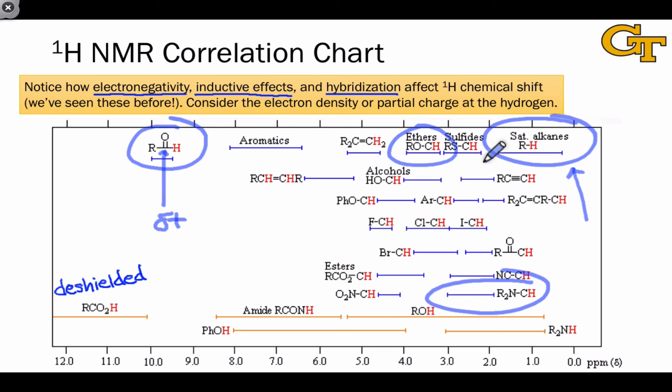Hybridization plays a role in the difference between saturated alkane protons and alkene protons, which show up at higher chemical shift. Although I won't delve into the explanation at this point, alkyne protons are relatively unique in being shielded, and aromatic protons show up distinctly more deshielded than regular alkene protons.